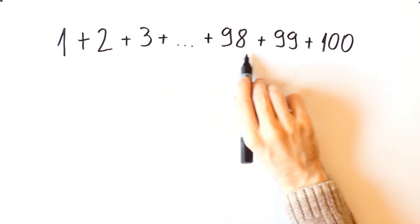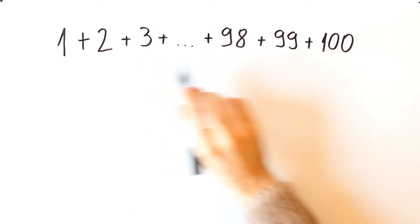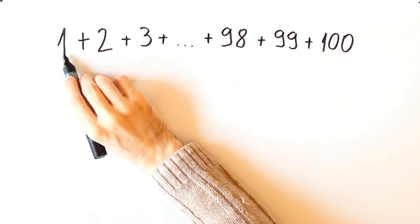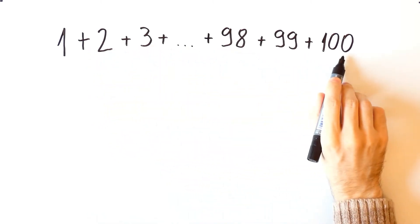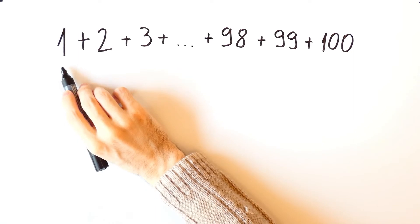Suppose we want to find the sum of the first 100 numbers. One way to do it would be to start with 1, then add 2, then 3, and so on all the way to 100. That would of course take a lot of time.